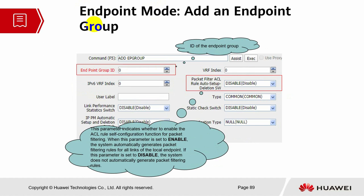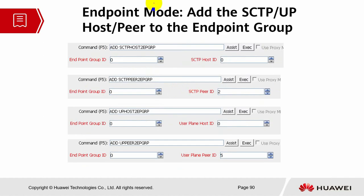Next is endpoint mode group. When you enable endpoint mode, you are actually binding the host and peer together. Usually the SCTP control plane will have its own endpoint group, and the user plane will have its own endpoint group — though in some cases they can be shared. So endpoint group is basically the binding process of your host and the peer, from both SCTP and user plane. Endpoint mode needs to be bound to SCTP and user plane host and peer.